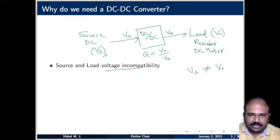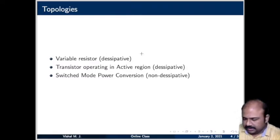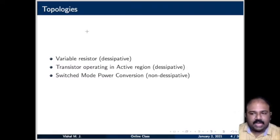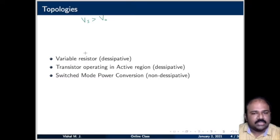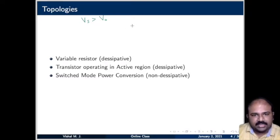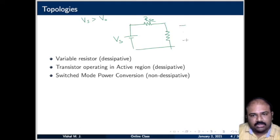Now let us get into more details. If the source voltage is more than the load voltage and we need a lesser voltage than the available source voltage, the easiest approach is to dissipate the extra voltage in a series dissipative element. We have a source voltage with a series resistance R_SC and the load. The voltage across the load is less than the source voltage.